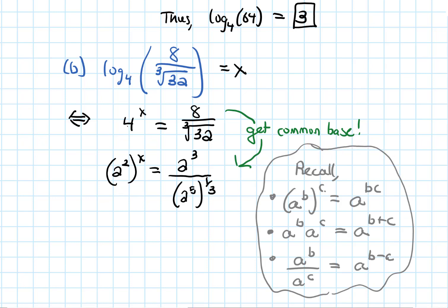If we apply these on the left-hand side, I have a power, this 2, to another power, this x. So we multiply them. We'll get 2 to the 2x. On the right-hand side, I have 2 to the 3 on the top. And then on the bottom, I have this other power to another power. So I multiply the 5 and the 1 third. We'll get 2 to the 5 thirds.